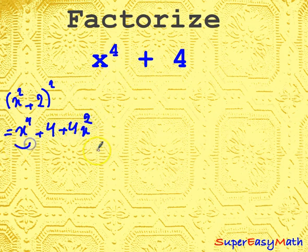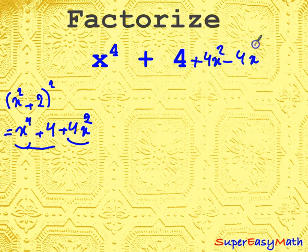Now here we have x^4 + 4, but we still need 4x^2 to complete the square. So we can add 4x^2 and subtract 4x^2.